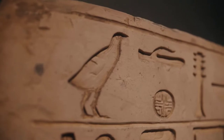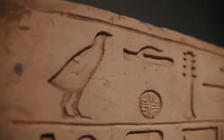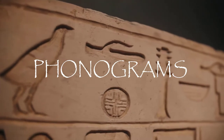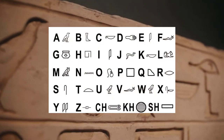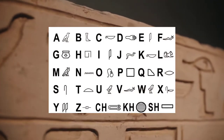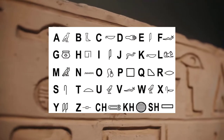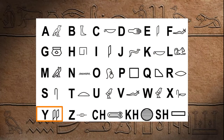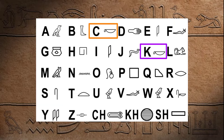Just like in our writing, some ancient Egyptian symbols represented a sound. These symbols are called phonograms. There are cases where two different symbols have the same sound — see the letter Y. This is just like when some of our letters can make the same sound depending on the word, for example, C and K.